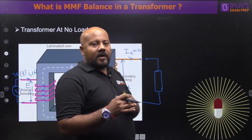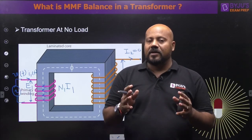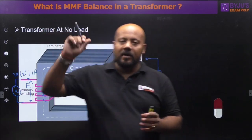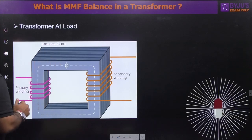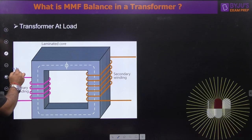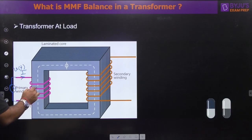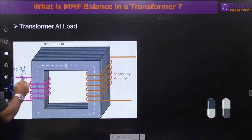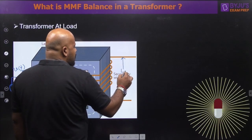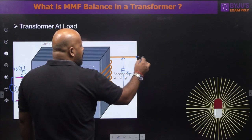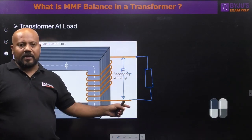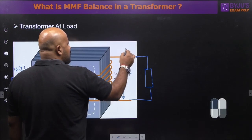Now let us connect a load to the transformer and understand how transformer action delivers power to the load. With the source connected at the primary, current flows through the primary winding, inducing e1 (RMS value). An EMF e2 is also developed at the secondary side. Now the load is connected, and since there is a closed circuit, some current I2 flows in the secondary winding.